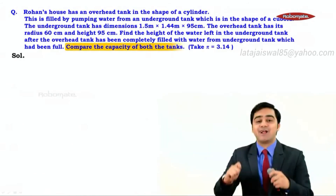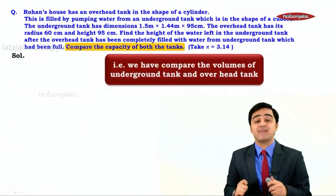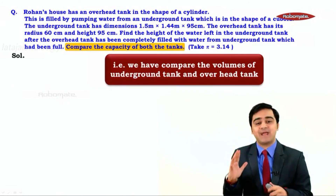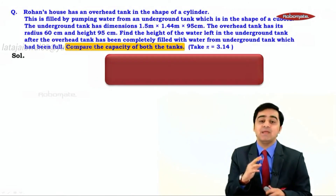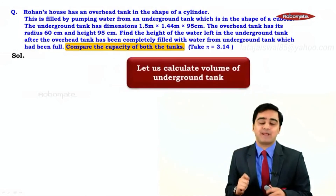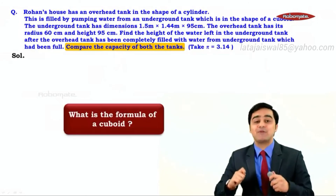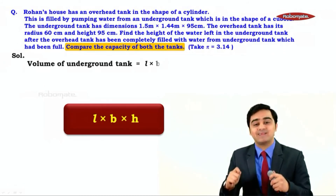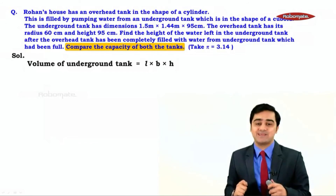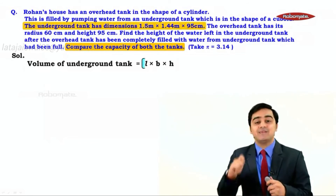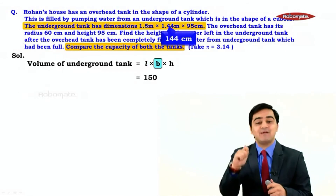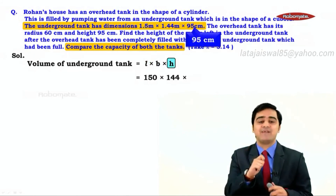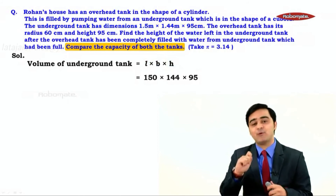Next, we need to compare the capacity of both tanks, meaning we compare their volumes. The volume of the underground tank uses the formula L × B × H. Substituting: L = 150 cm, B = 144 cm, H = 95 cm. So the volume of the underground tank is 150 × 144 × 95 cubic centimeters.